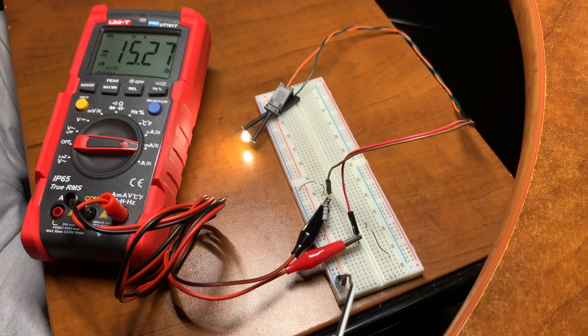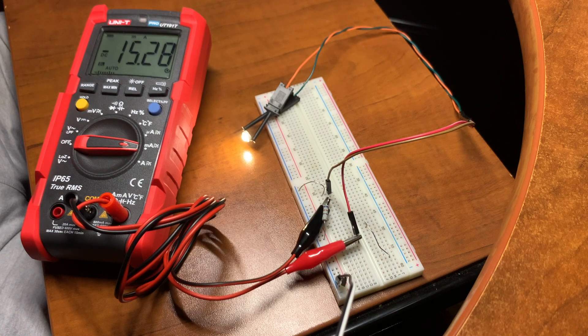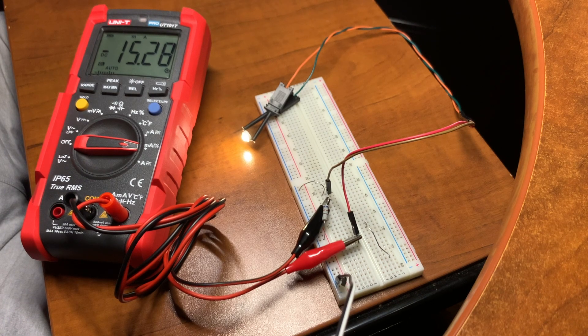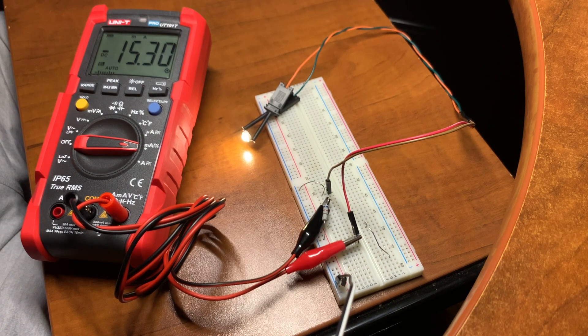And as the diode heats up, it will draw slightly more current. So you'll see the number climb to about 15.29, 15.30 milliamps, which again is an error of less than one percent.